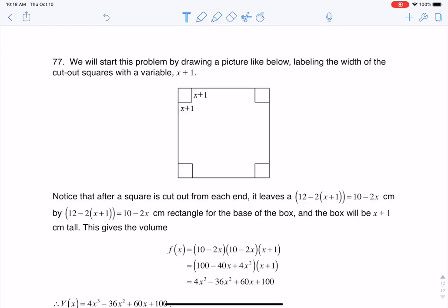Hey Math31, I had a question on number 77. So they told us that we had this square that was 12 units per side and they were gonna cut little squares out of that square in the corners and they were each gonna be x plus 1 units long.